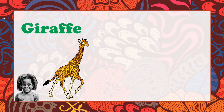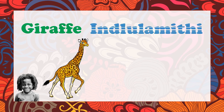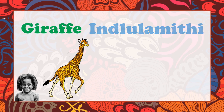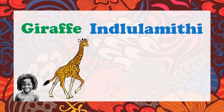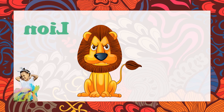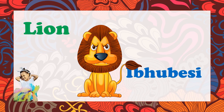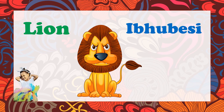What animal is this? It's a giraffe. A giraffe is Ingulamiti — that's a hard one. Ingulamiti. This is a lion, right kids? A lion is Ipubesi in Zulu. Ipubesi.